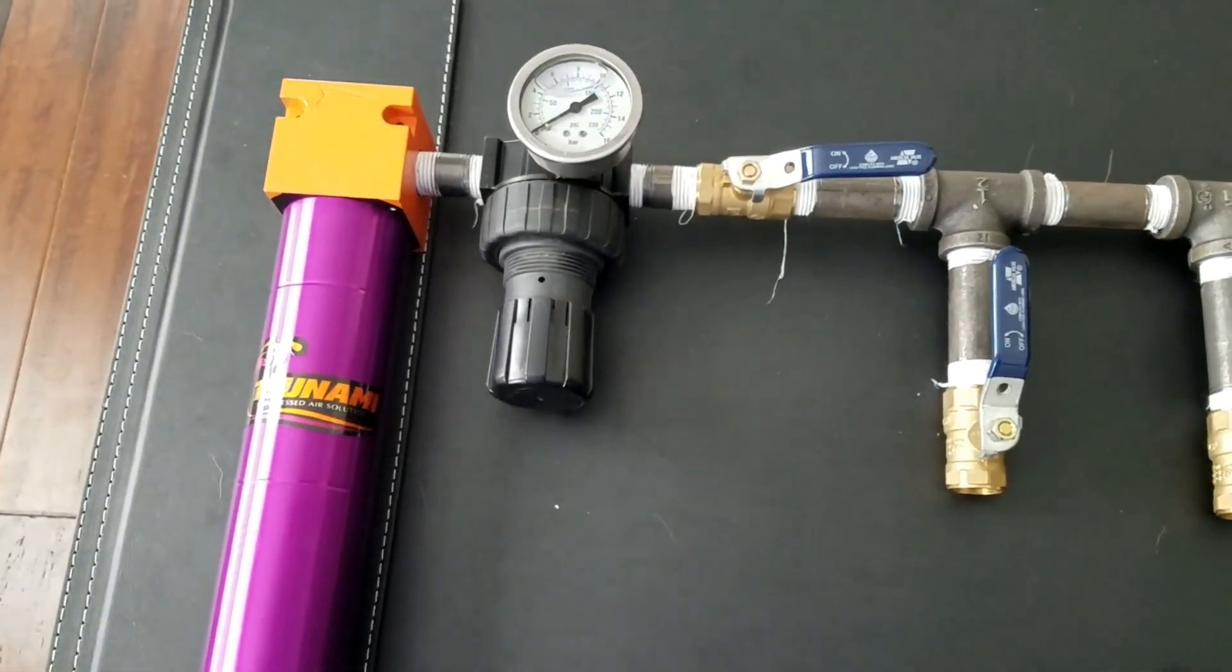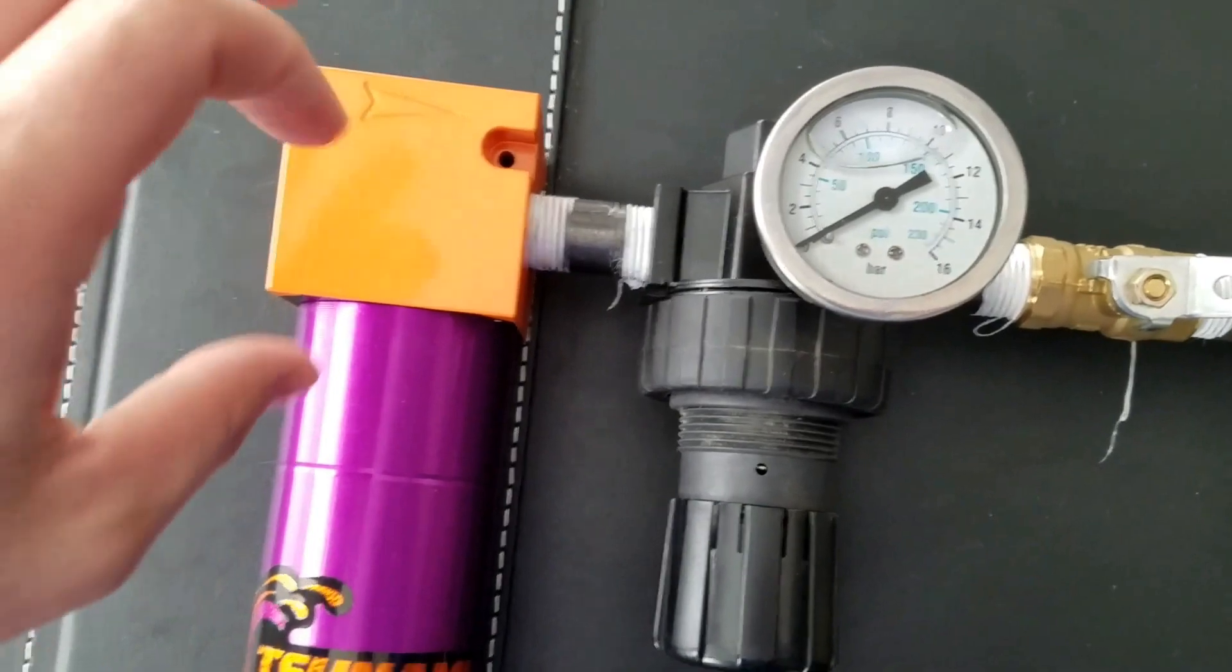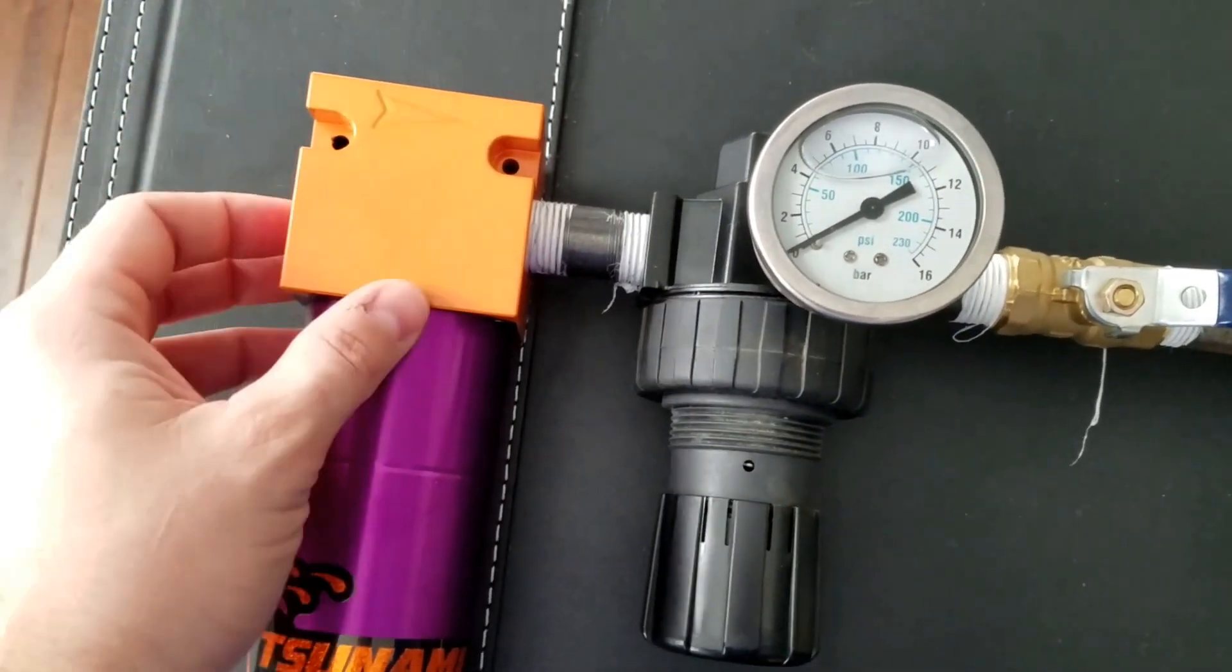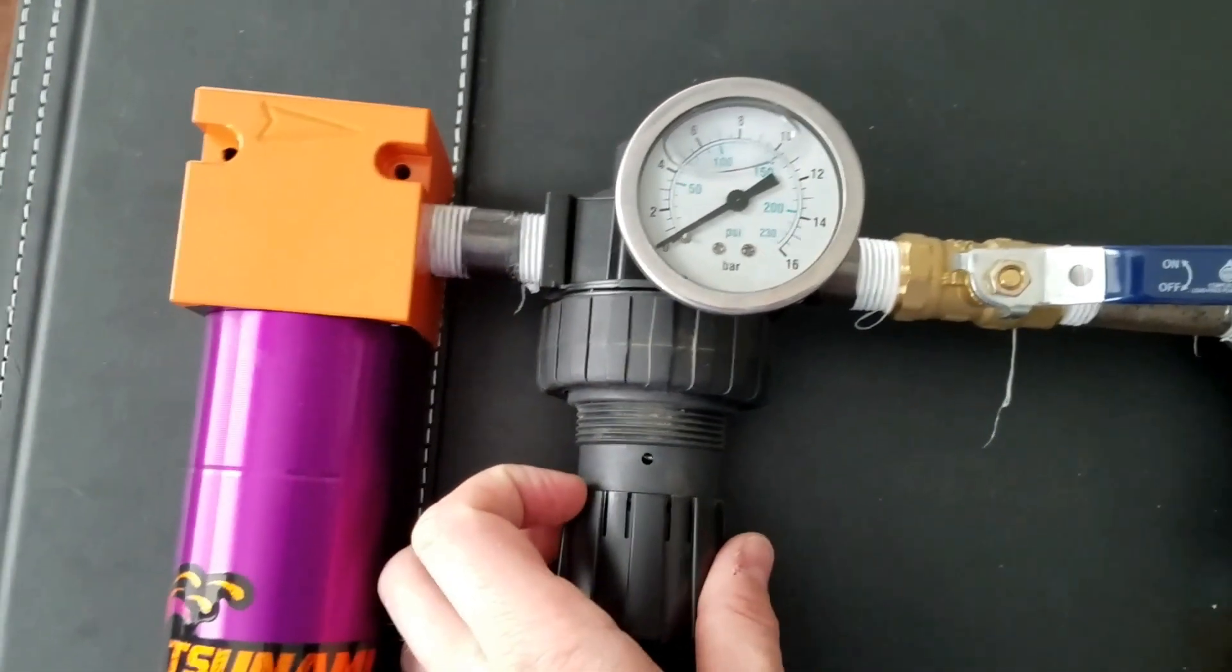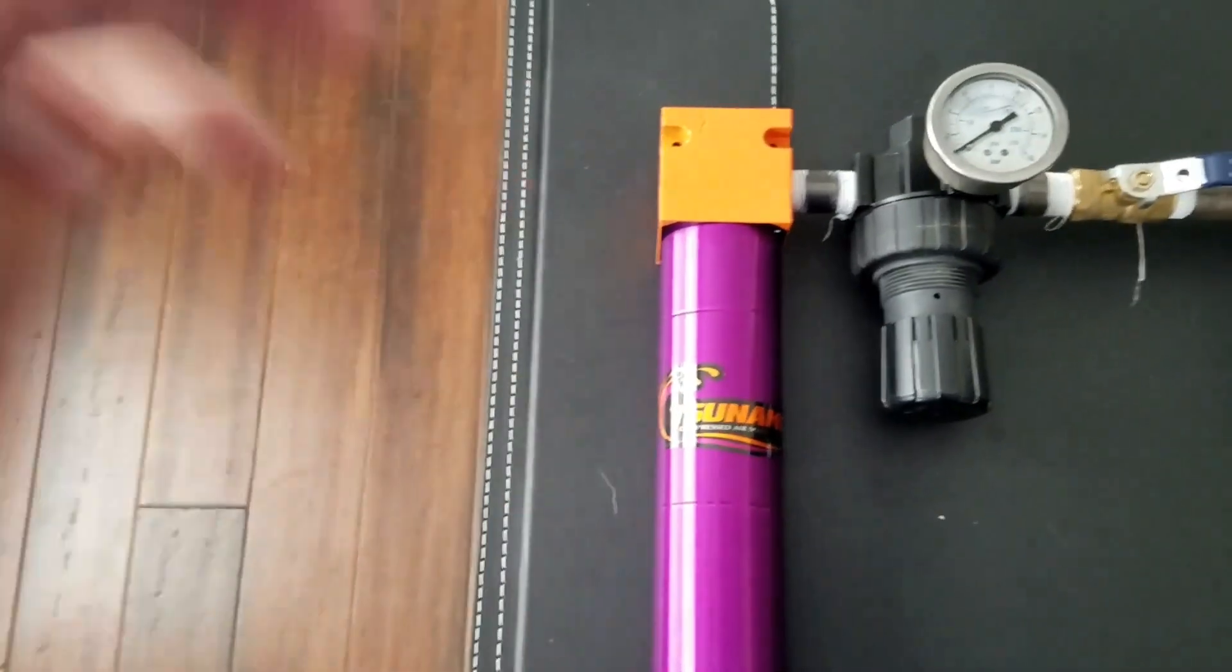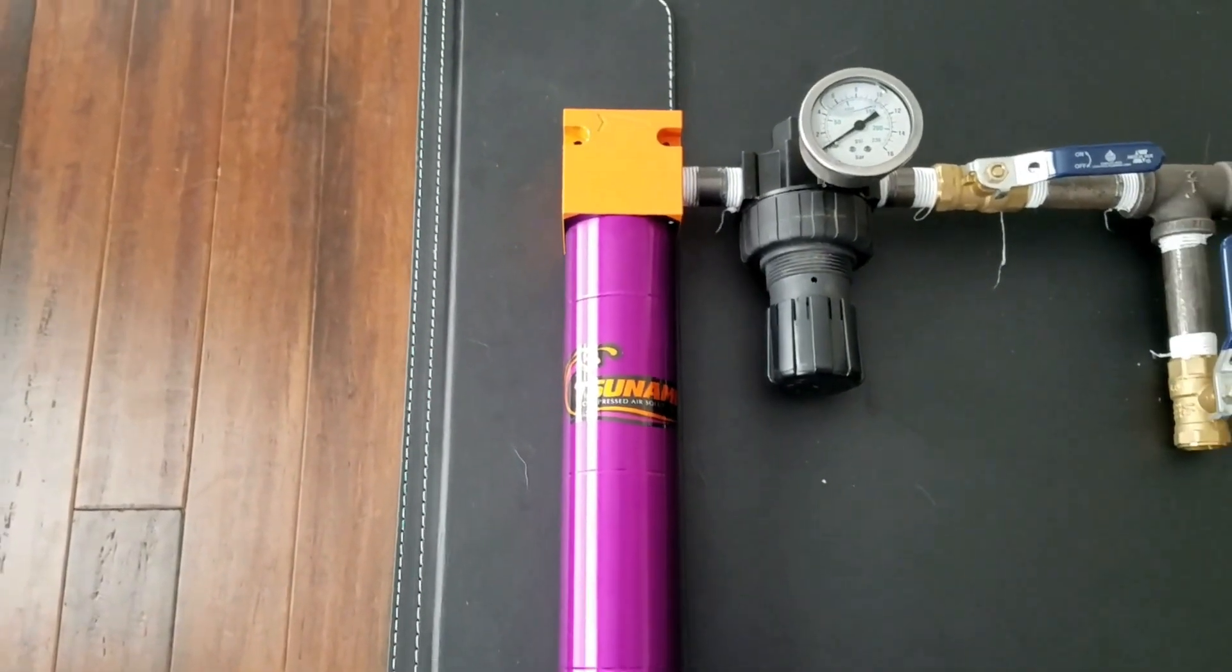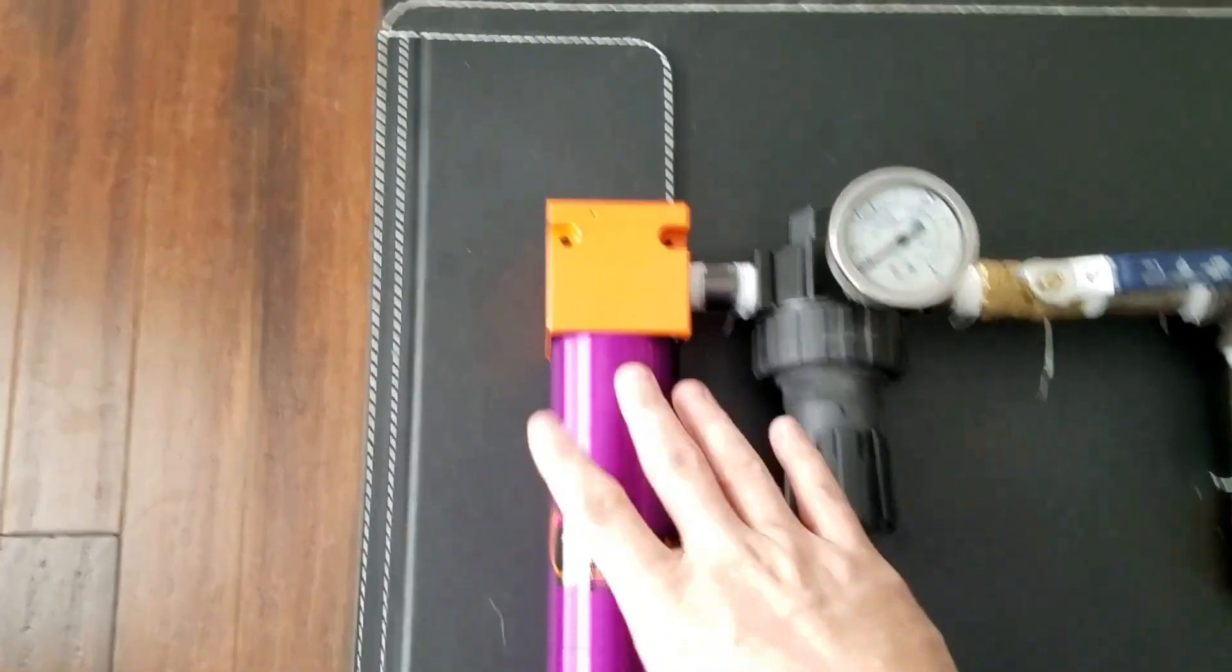But you can do it smaller, it doesn't really matter. Right here we have our pressure regulator. You want to have your water separator first so it can separate the water, and then you can regulate your pressure. This is rated up to like 250 PSI, and you shouldn't be running anything more than that. We certainly don't run anything less than 100 PSI, so it's not an issue.